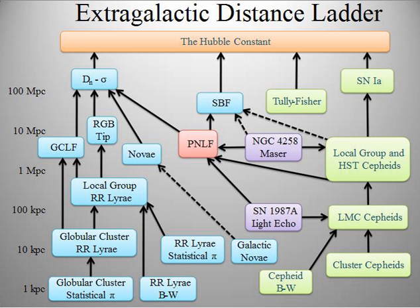A succession of distance indicators—which is the distance ladder—is needed for determining distances to other galaxies. The reason is that objects bright enough to be recognized and measured at such distances are so rare that few or none are present nearby, so there are too few examples close enough with reliable trigonometric parallax to calibrate the indicator. For example, Cepheid variables, one of the best indicators for nearby spiral galaxies, cannot yet be satisfactorily calibrated by parallax alone, though the Gaia space mission is expected to solve that specific problem.